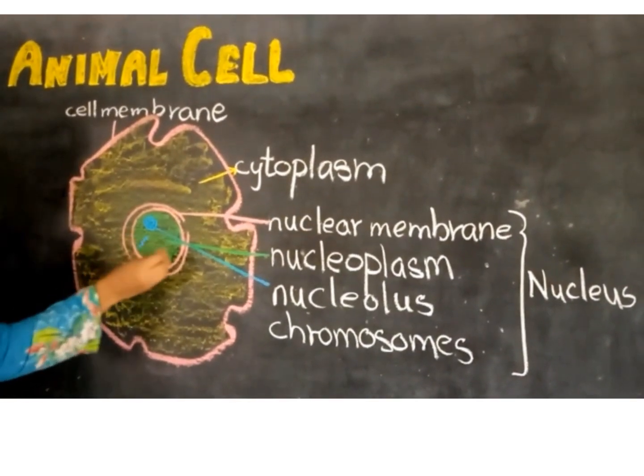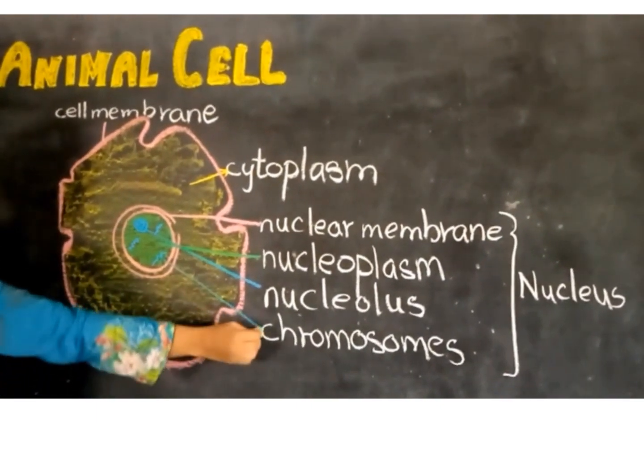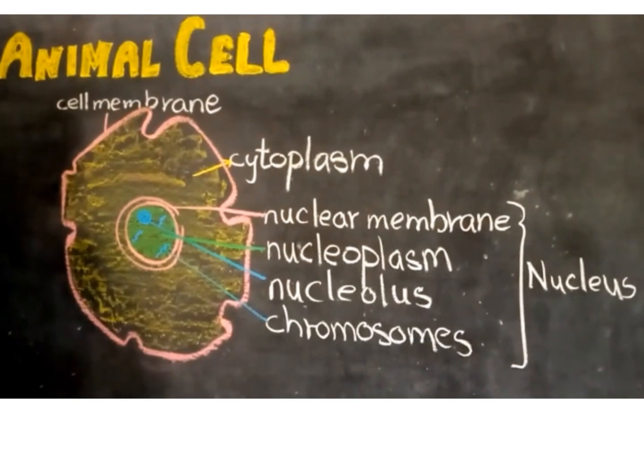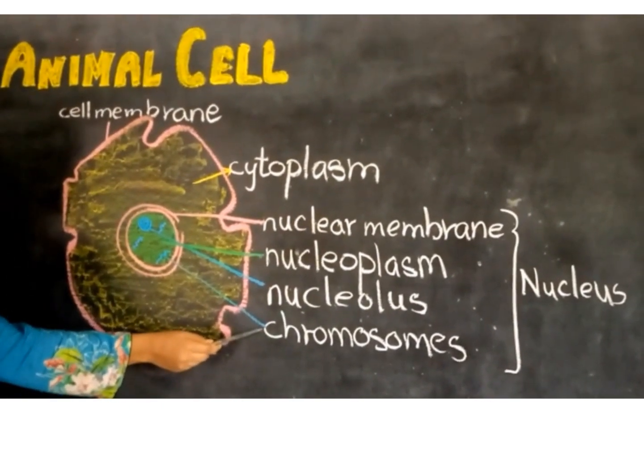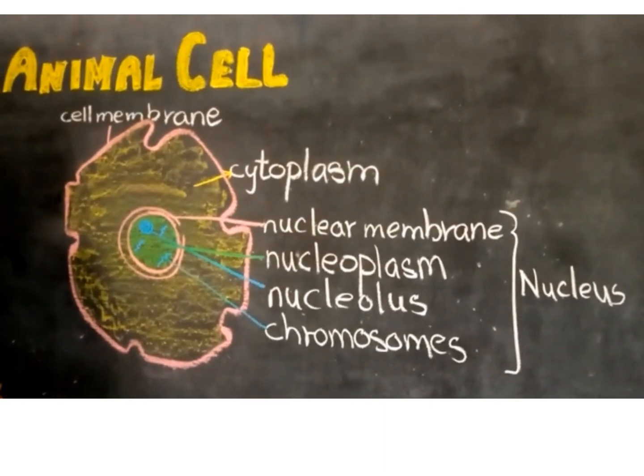Thread-like structures present inside the nucleus are called chromosomes. Chromosomes are made up of genes which are responsible for transmitting the characteristics from the parents to the offspring.